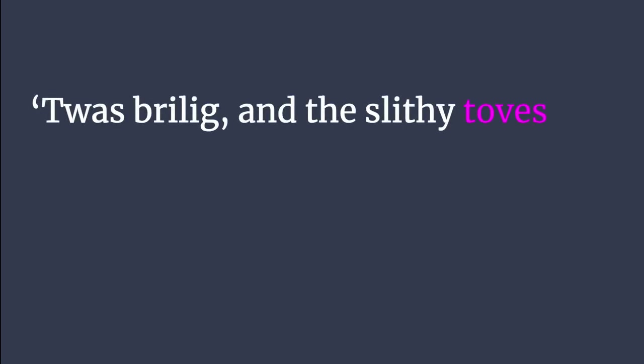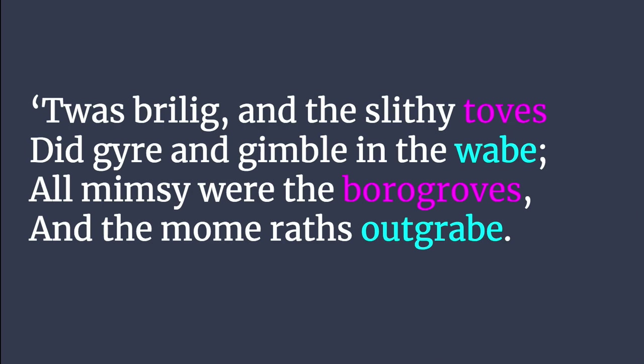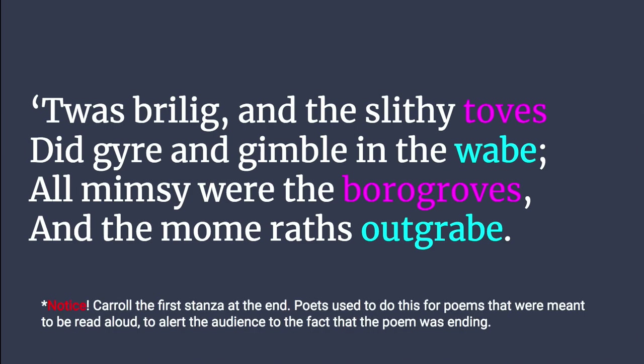And then finally we are back to our last, but also first, stanza: Twas brillig, and the slithy toves did gyre and gimble in the wabe. All mimsy were the borogroves, and the mome raths outgrabe. Notice that Carroll uses the first stanza as the end stanza. Poets used to do this for poems meant to be read aloud or recited, to alert the audience to the fact that the poem was ending. Shakespeare does this exact same thing in his plays — when a scene comes to a close, a character will say two lines that rhyme, called a rhyming couplet. Because Carroll has repeated the first stanza as the last stanza, it alerts the audience: this is the end of the poem.